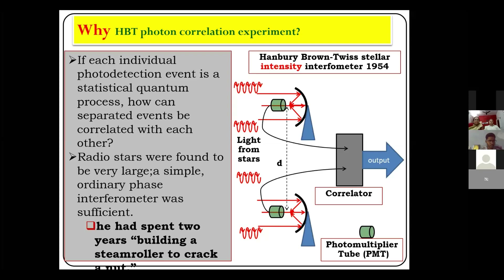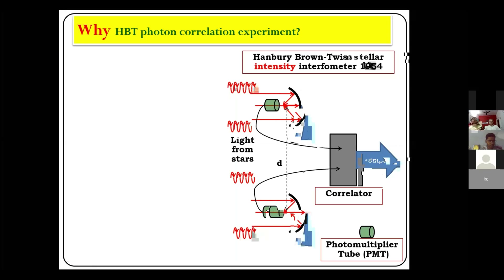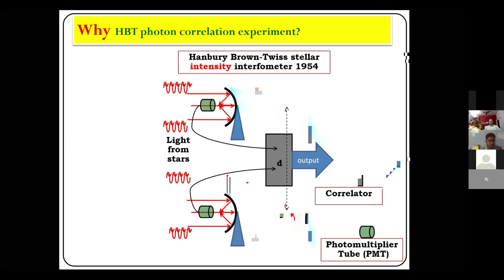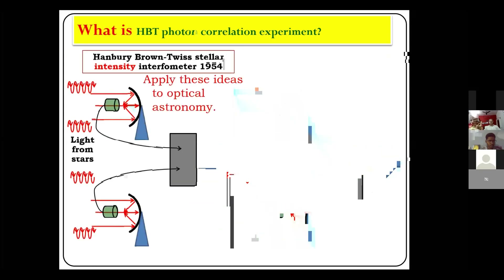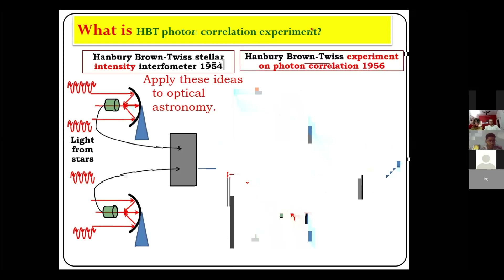That was the statement of Hanbury. But they were enthusiastic and moved further, thinking they could use the same setup for visible light or for visible stars. So they started doing an experiment known as the photon correlation experiment. They did this experiment in 1956.